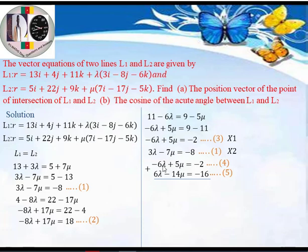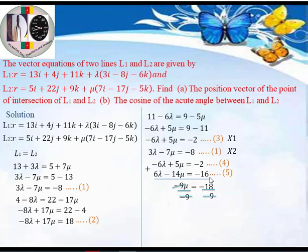On the right-hand side: -2 + (-16) = -18. So -9μ = -18. Dividing both sides by -9 gives μ = 2.